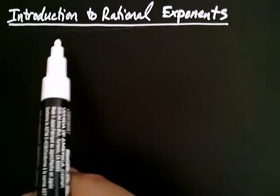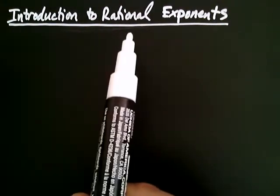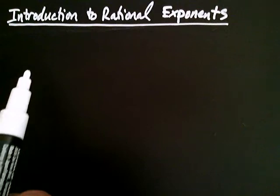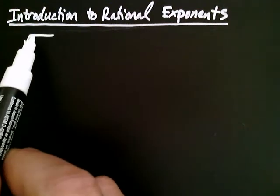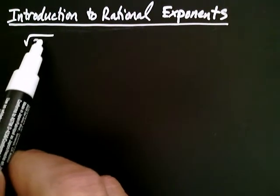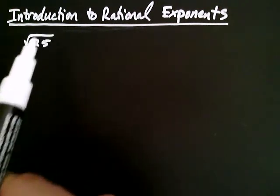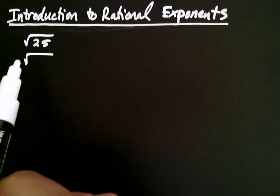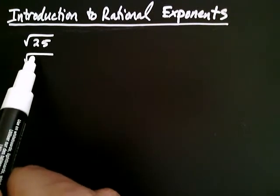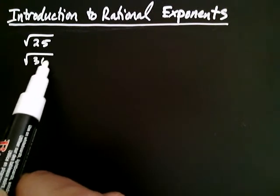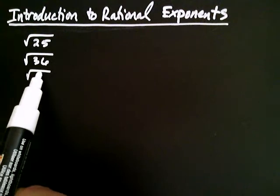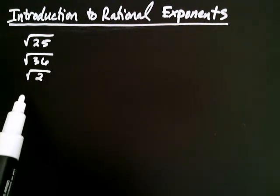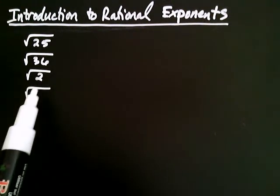Let's consider an introduction to rational exponents. Let's start by considering the following expressions: the square root of 25, the square root of 36, the square root of positive two, and the square root of positive 49.